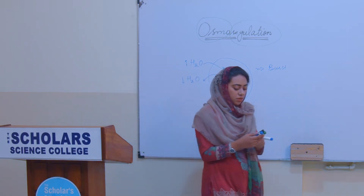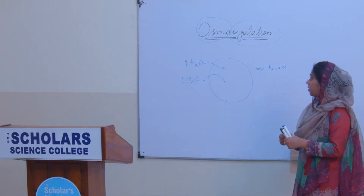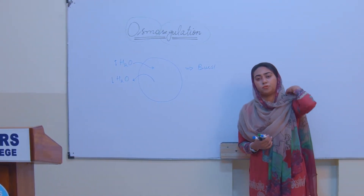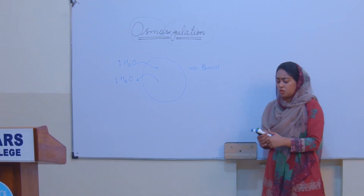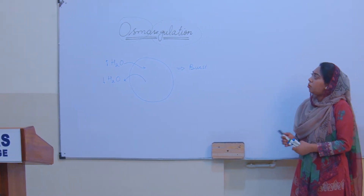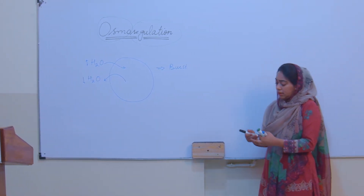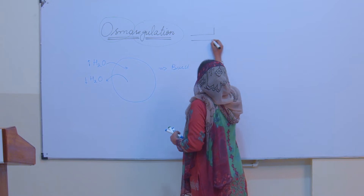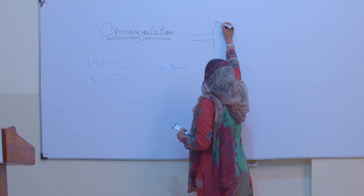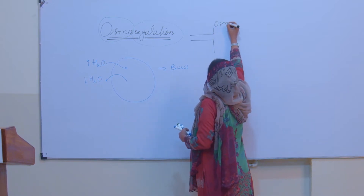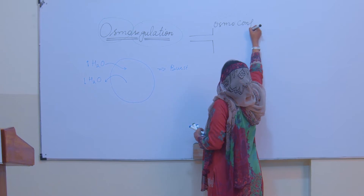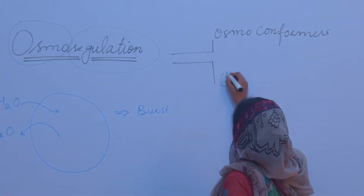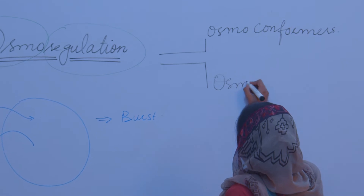We have this reference from chapter 10 — forms and functions in plants. If we look at osmoregulation, there are two approaches: one is the osmoconformers, and the other is the osmoregulators.